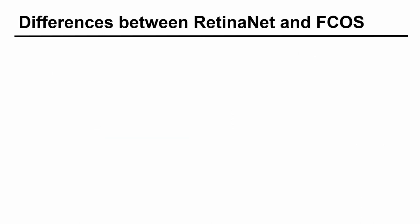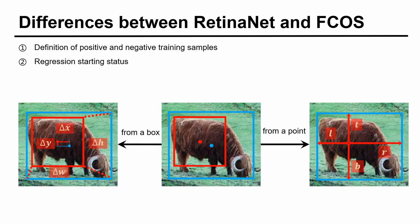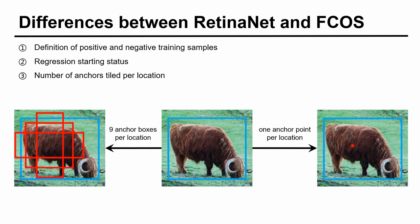There are three differences between RetinaNet and FCOS. The first one is the definition of positive and negative training samples. RetinaNet uses IOU while FCOS uses spatial and scale constraints to define training samples. The second one is the regression starting status. RetinaNet regresses the object bounding boxes from the preset anchor box while FCOS regresses from the anchor point.